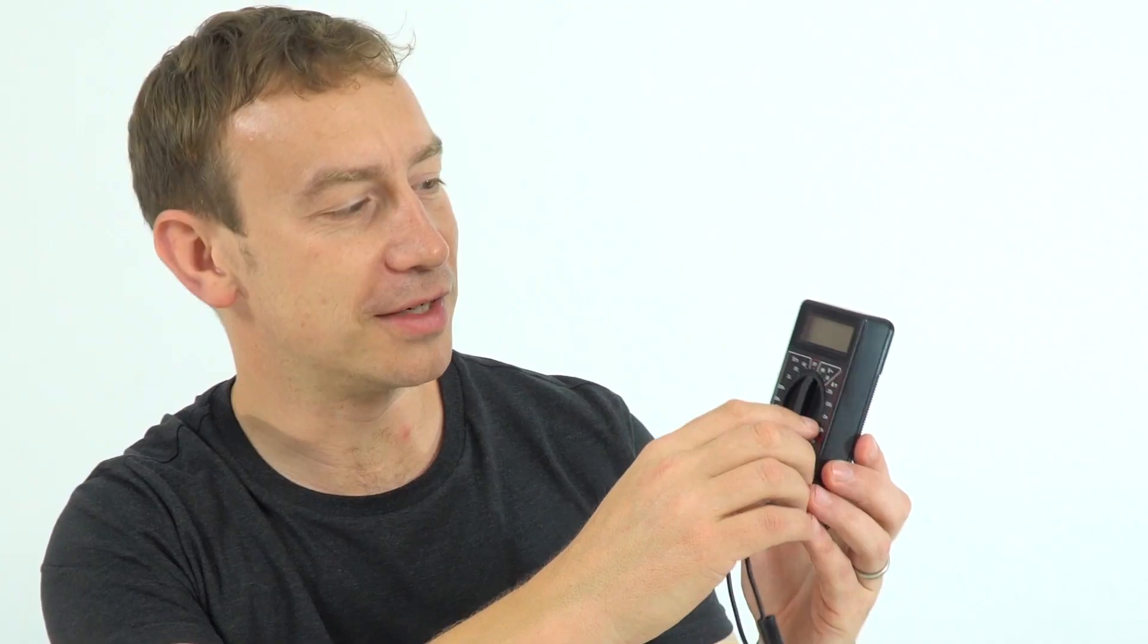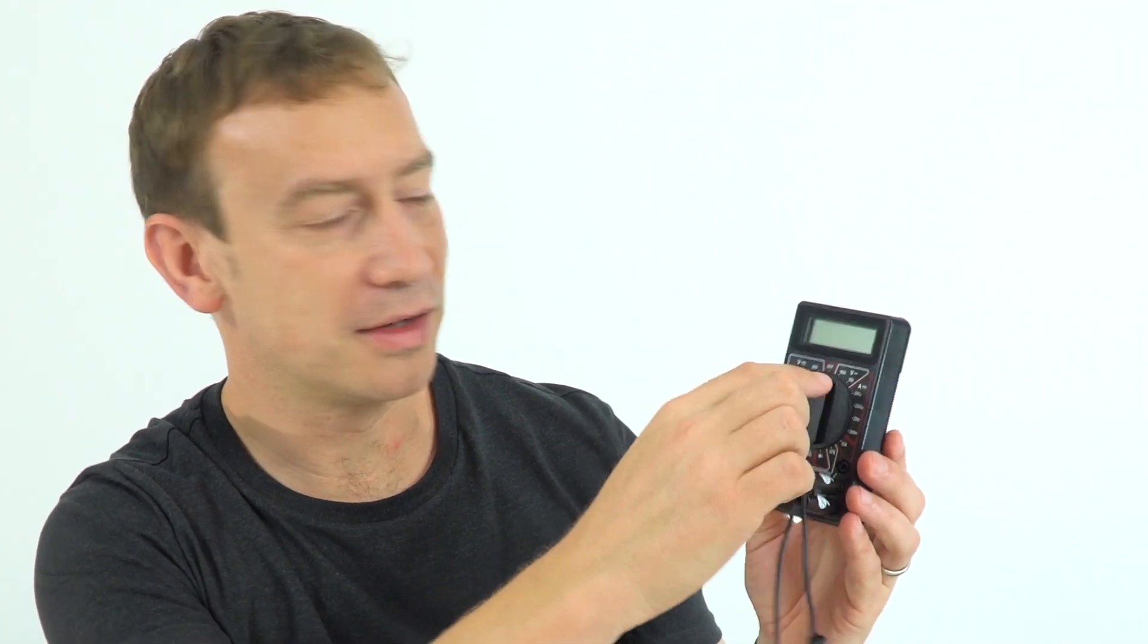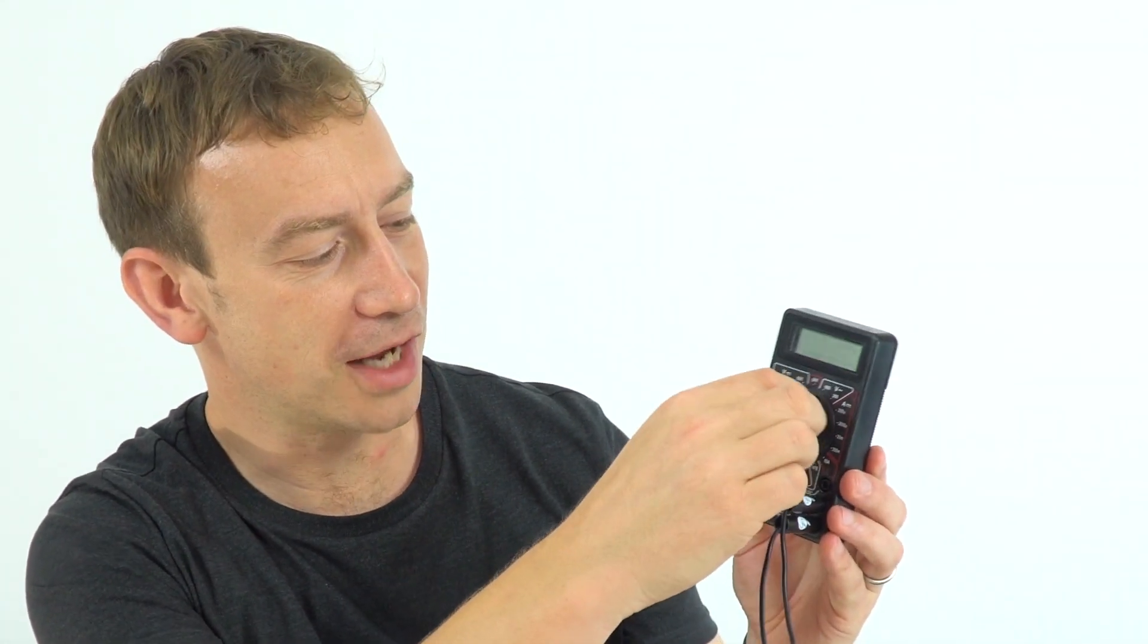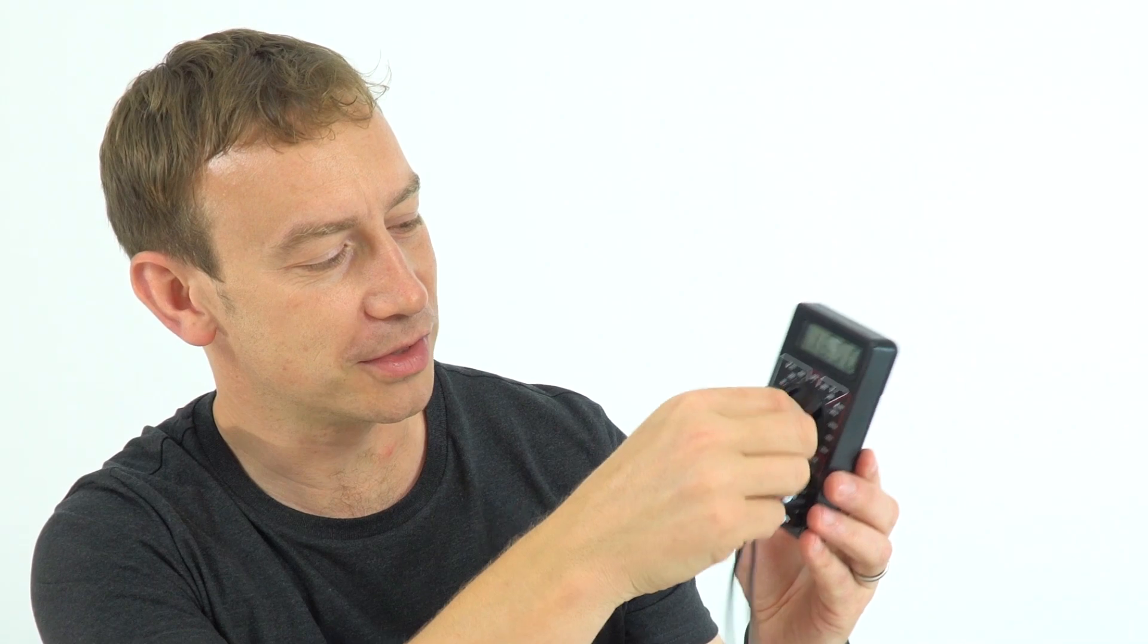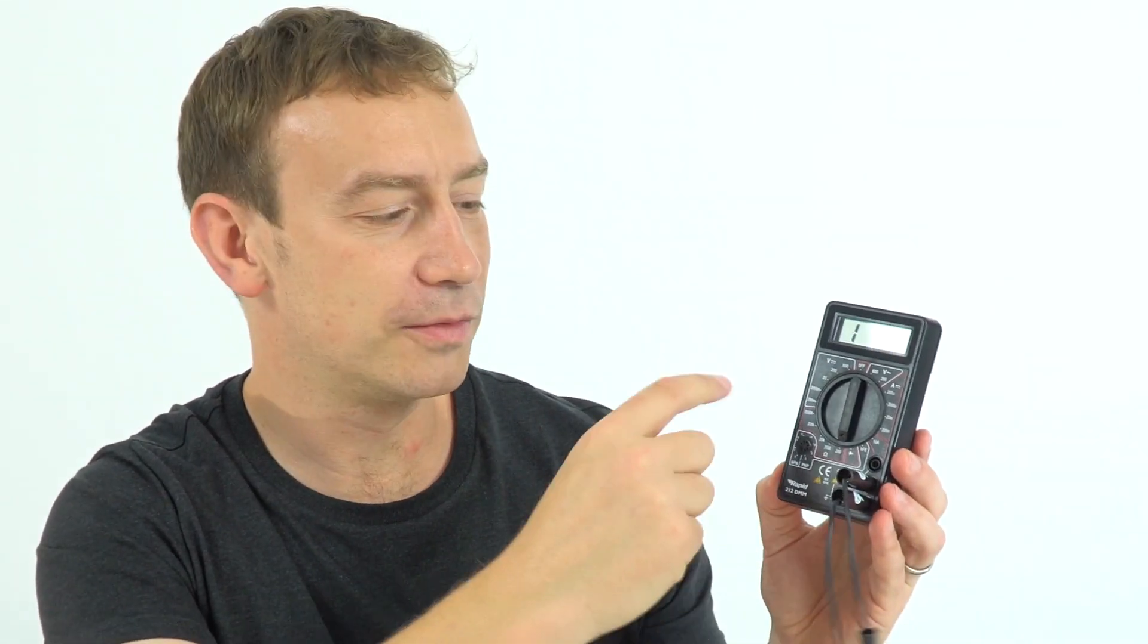We can actually see it using this device over here. So this is a multimeter, and it can be used to measure the current, the potential difference, and if I use the setting down at the bottom left, it measures the resistance.